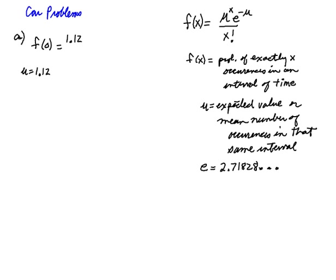x is 0, so that would be 1.12 to the 0 power, e to the minus 1.12, and then divided by x factorial or 0 factorial. Both 1.12 to the 0 and 0 factorial are both 1, so this just simplifies to e to the minus 1.12, and I'm going to use my calculator to get that.